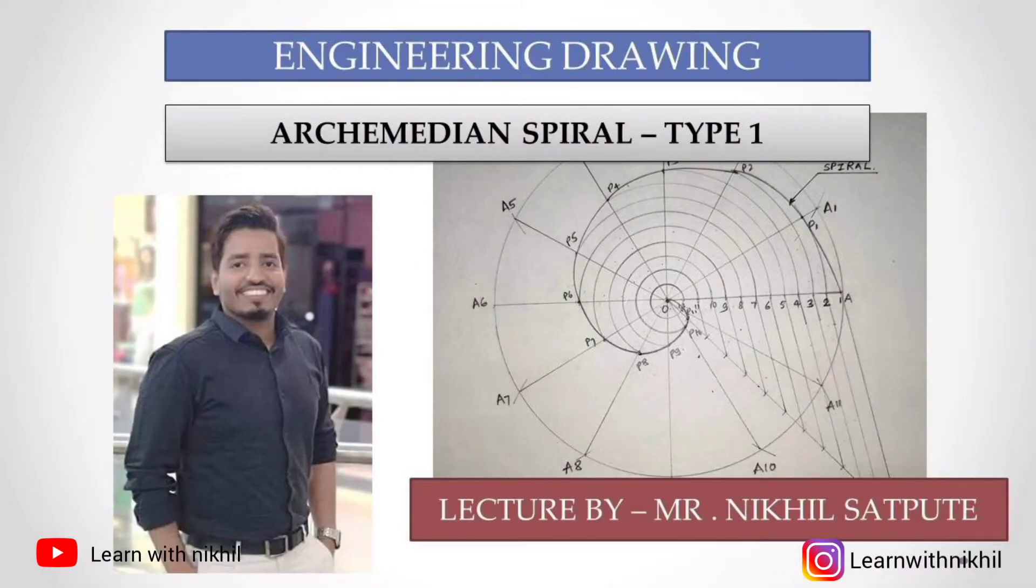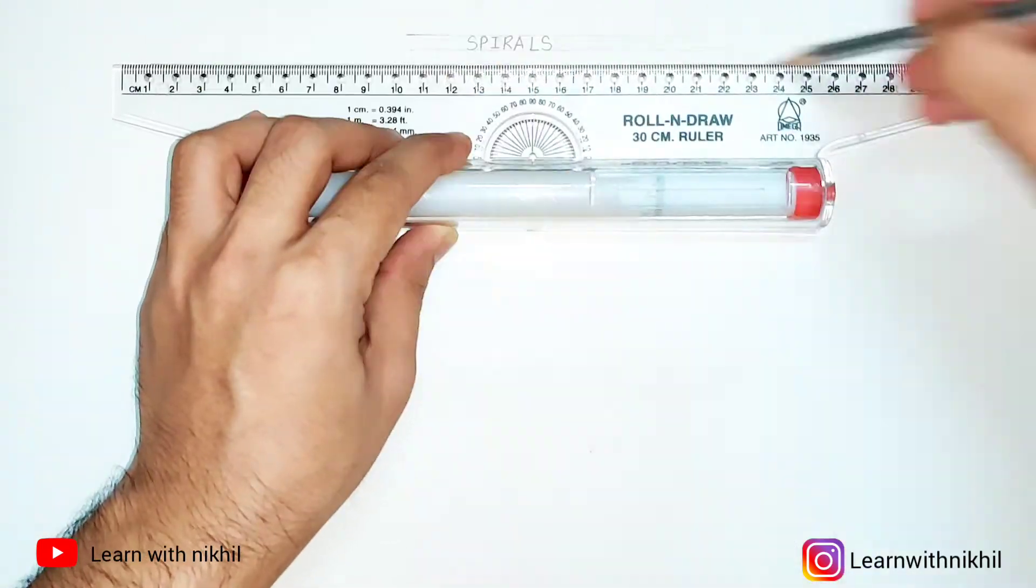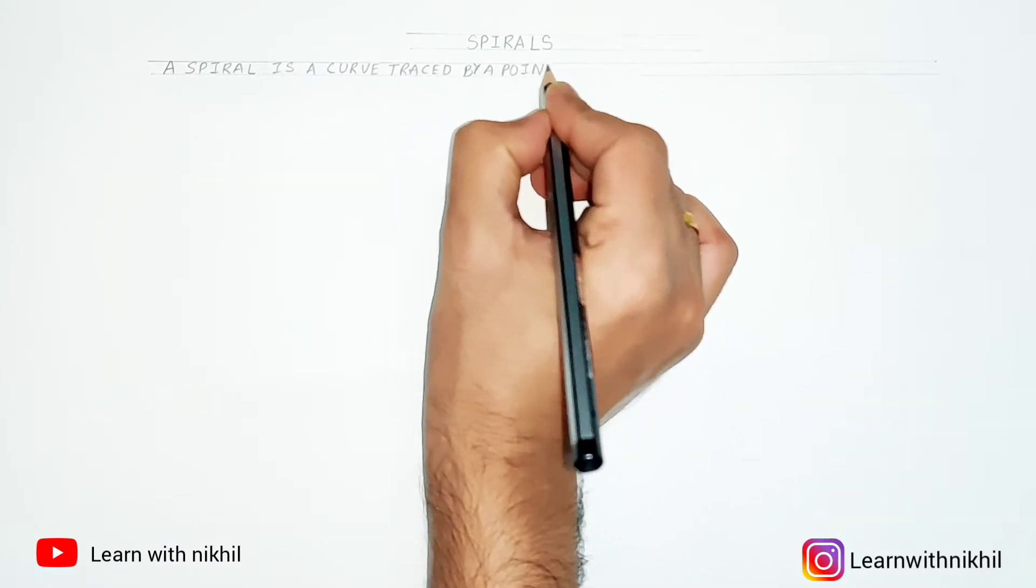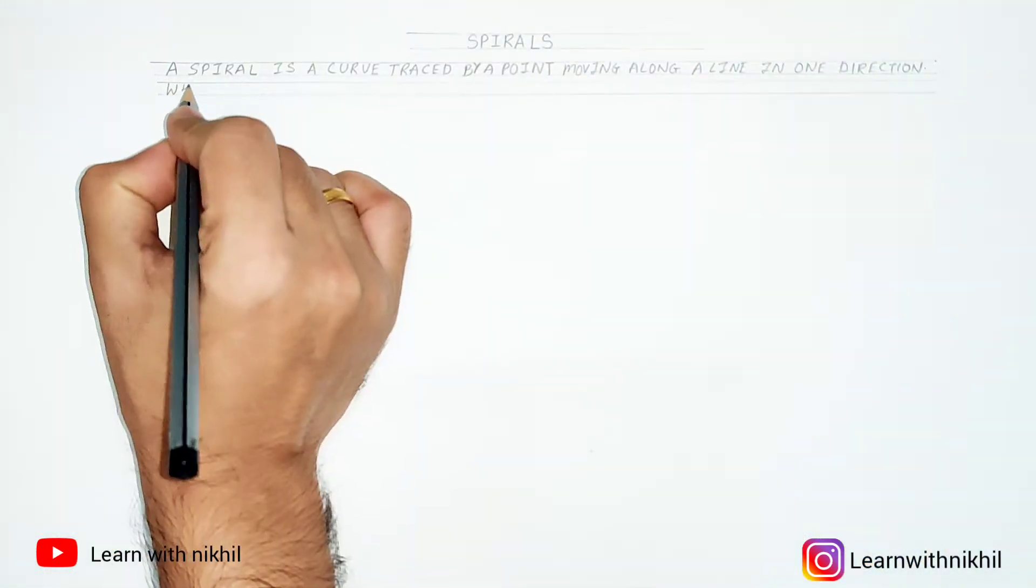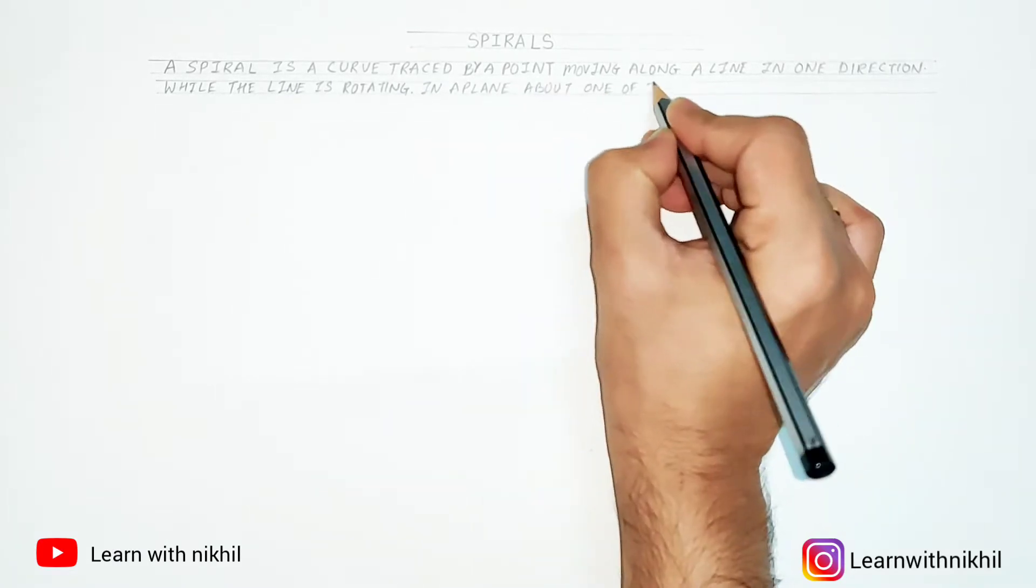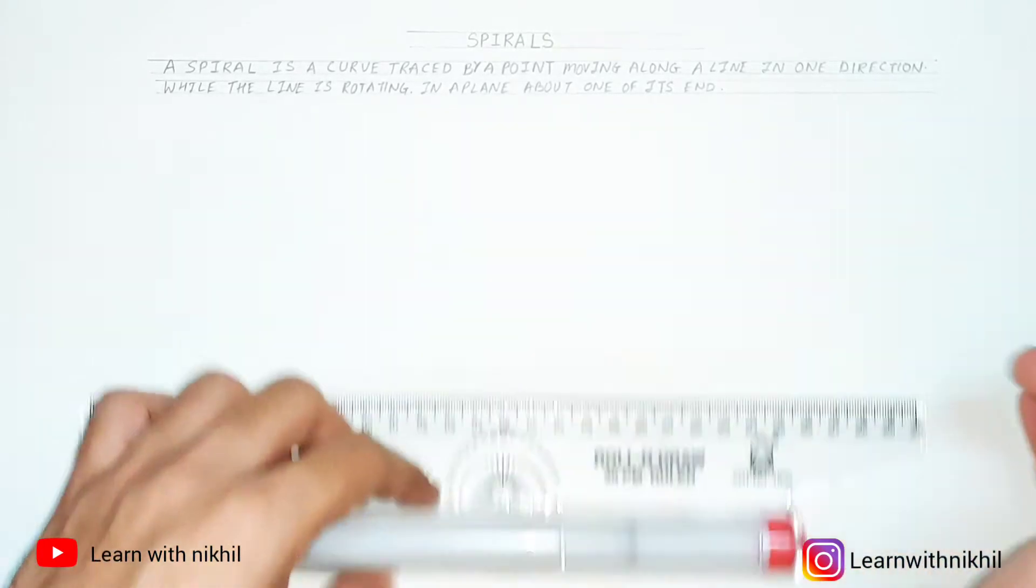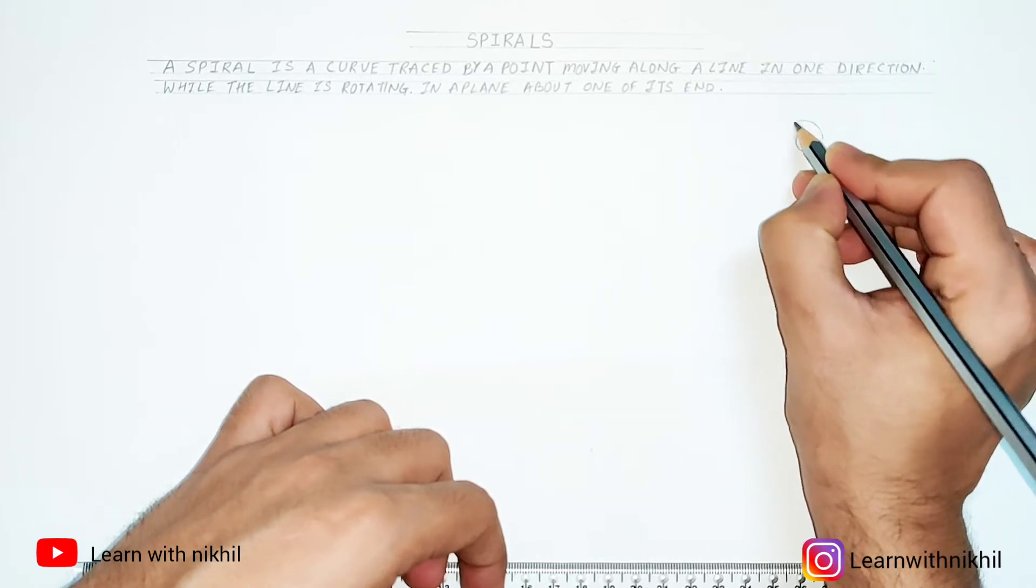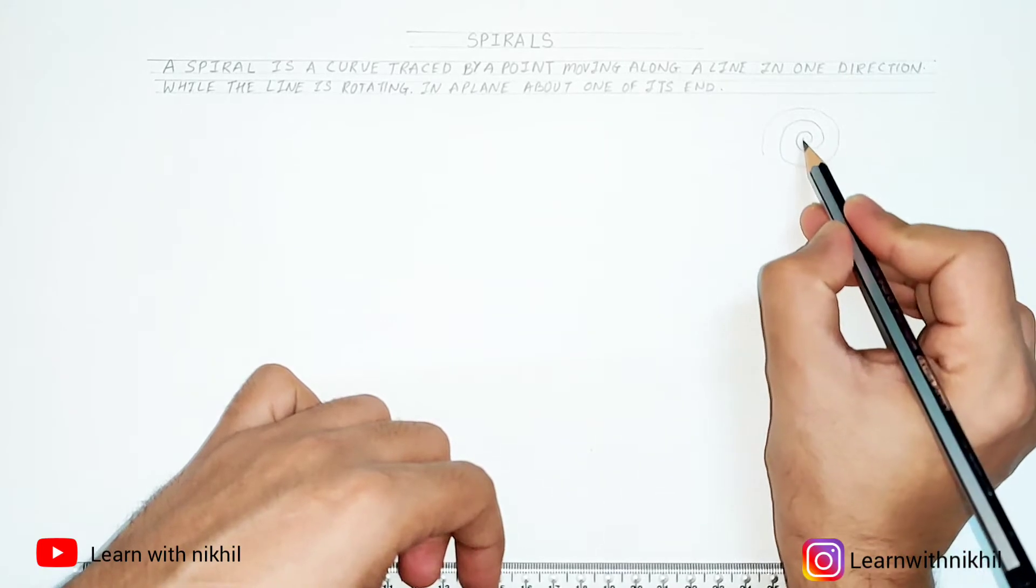Hello and welcome back to my channel Learn with Nikhil. Today we are going to study about spirals, also called Archimedean spirals. The technical definition of a spiral is a curve traced by a point moving along a line in one direction while the line is rotating in a plane about one of its ends. In short, a spiral is nothing but a spring.